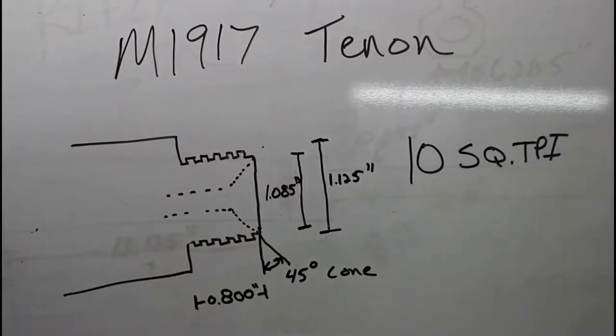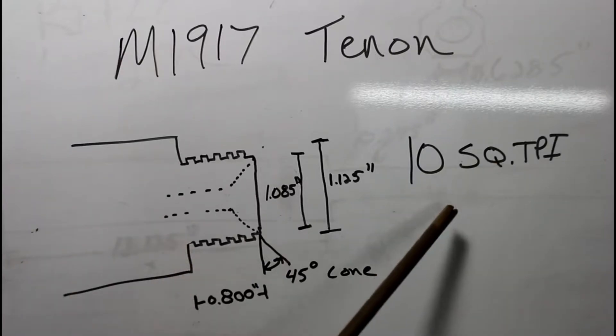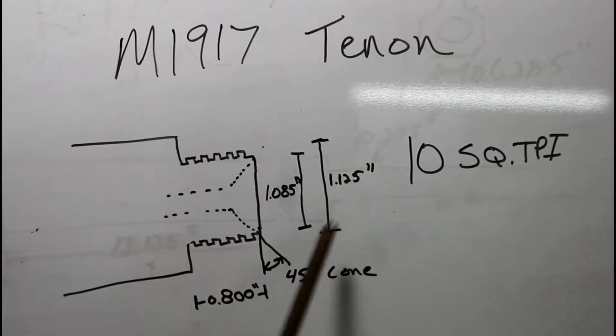Here are our thread dimensions for the chamber end of our barrel. These are standard dimensions that can be found on the internet—just search for 1917 Enfield threads. These are square threads, 10 threads per inch, perfectly square: 50 thousandths wide, 50 thousandths deep. Our major diameter of threads is 1.125 inches, our minor diameter is 1.085 inches. However, those numbers may vary a little bit for each receiver, so I always fit mine to each receiver.